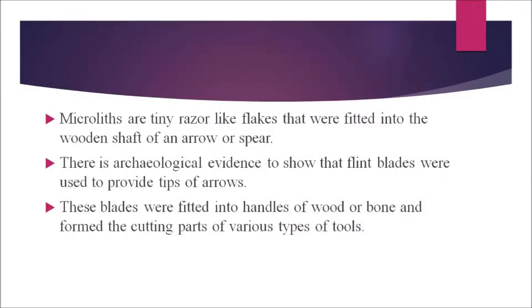Microliths are tiny rays of flakes that were fitted into the wooden shaft of an arrow or spear. There is archaeological evidence showing that flint blades were used to provide tips of arrows. These blades were fitted into handles of wood or bone and formed the cutting parts of various types of tools. The Paleolithic utilized more primitive stone treatments, while the Neolithic mainly used polished rather than chipped stone tools.